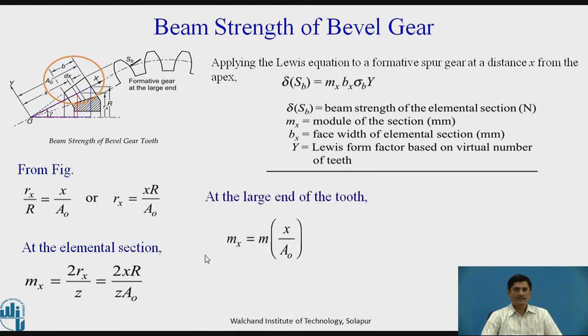At the elemental section, this small section, I need to check what is the value of Mx. Mx equals 2Rx upon Z, or we can rewrite it as 2xR upon Z A0. Why we did this? Instead of Rx, we put the value of Rx, xR upon A0. At the large end of the tooth, Mx equals Mx upon A0. Since Bx equals dx, we can find out the relation delta Sb equals M sigma B Yx dx upon A0.